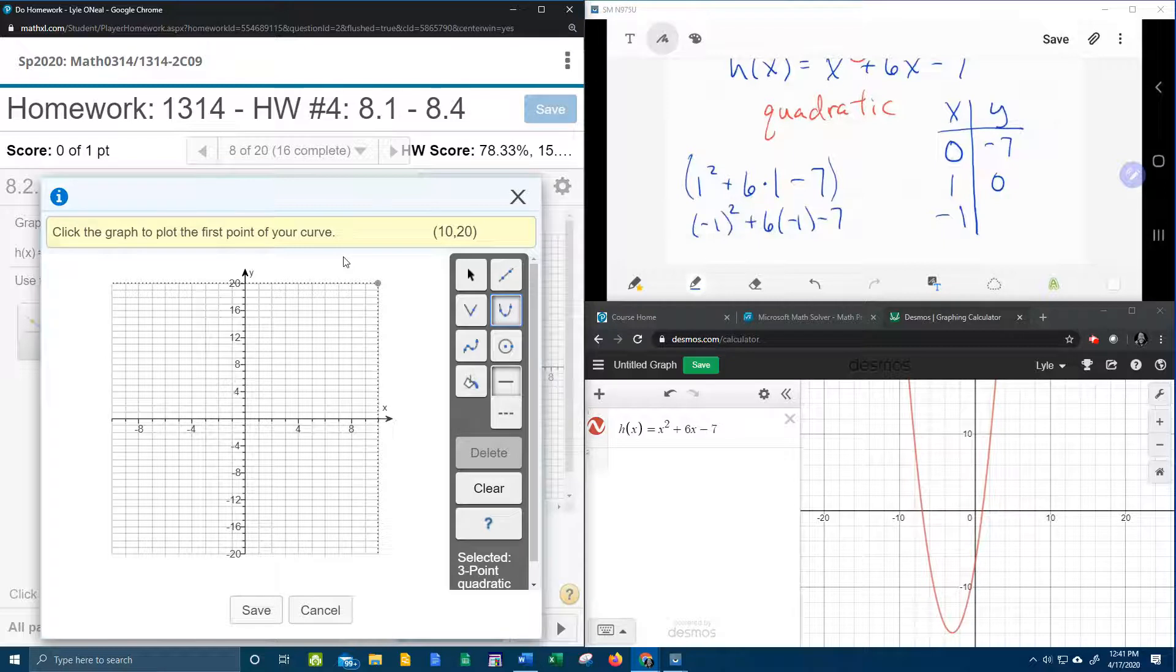negative 1 squared plus 6 times negative 1 minus 7, that's going to give us negative 12. And the graph will allow me to plot that.